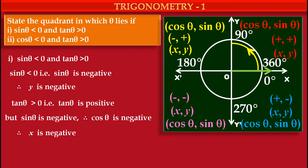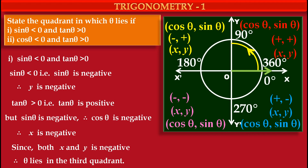Therefore, x coordinate is also negative. Since both x and y coordinates are negative, we can say that theta lies in the third quadrant. In the third quadrant, the x coordinate is negative as well as the y coordinate is also negative. So if both coordinates are negative, theta lies in the third quadrant.